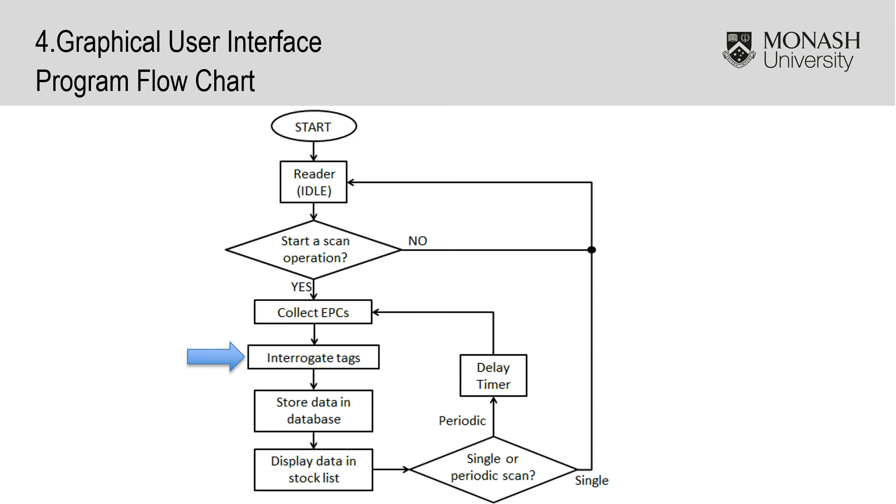This is like talking to a group of people. For example, you first ask everyone for their name and then you can ask each person for their personal information. All information is then saved to a database and displayed to the stock list. If it was a single scan, then the reader will go back to the idle state. In the case of a periodic scan, the reader waits for a period of time before collecting EPCs again.